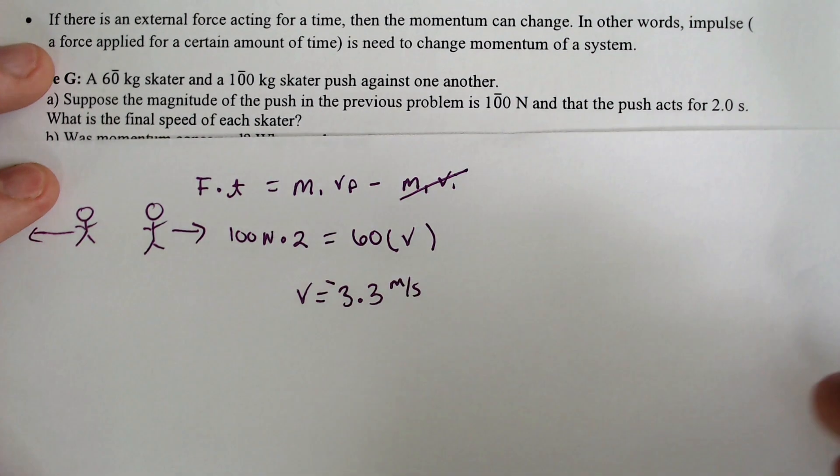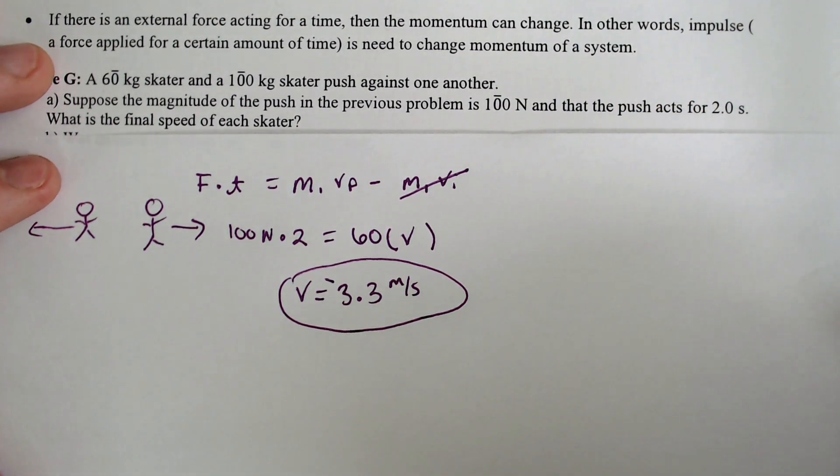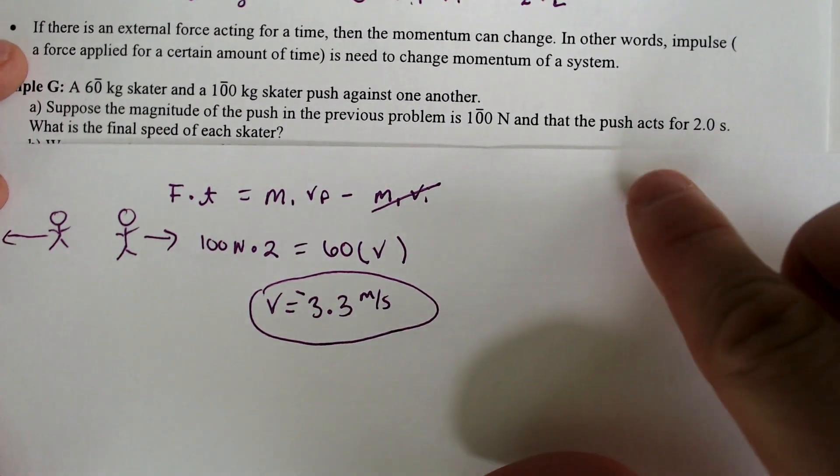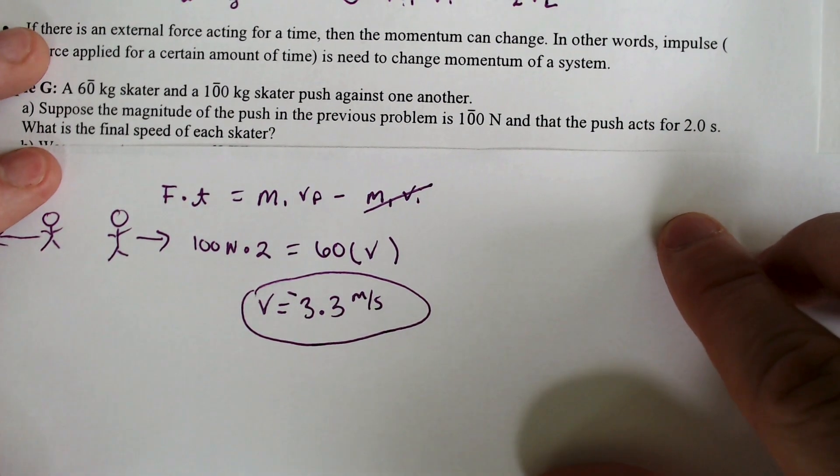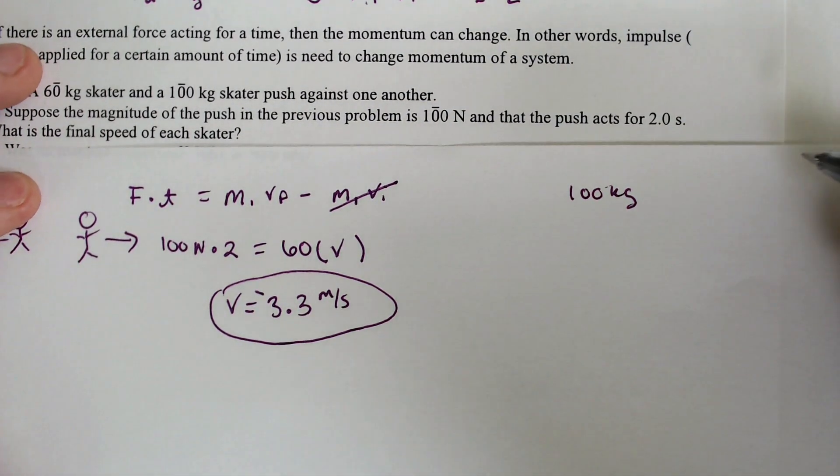So that's the velocity of the first skater, the 60-kilogram skater. What if we had to do this for the other skater? Well, it's the same thing. The 100-kilogram skater has the same scenario happening for them,